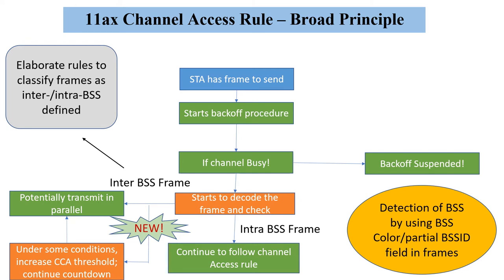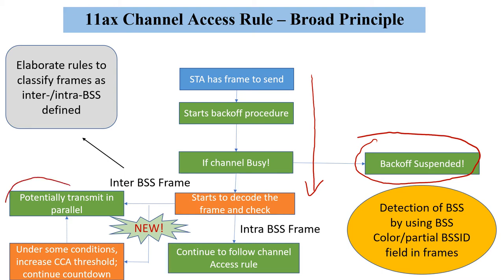Just a quick recap. Spatial reuse implies in earlier generations we followed the logic where as soon as we hit any Wi-Fi frame above a certain threshold we just suspend our back off. But now in the case of 11ax we can potentially transmit in parallel. Of course, you cannot do it when your same BSS traffic is going on, that is why intra-BSS means we need to follow the old style. Only for inter-BSS spatial reuse applies, and we can do a lot of classification based on things like BSS color, spatial reuse groups, etc.